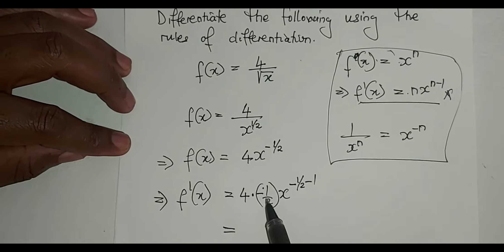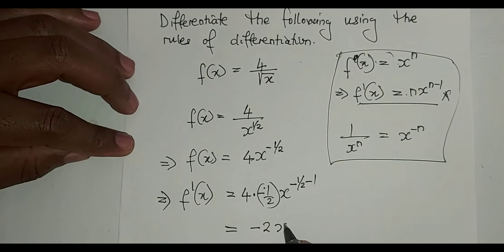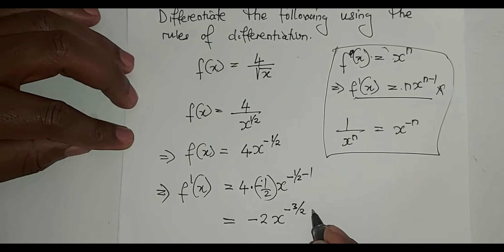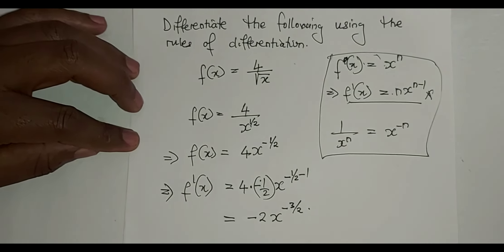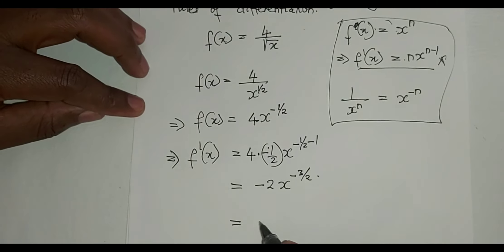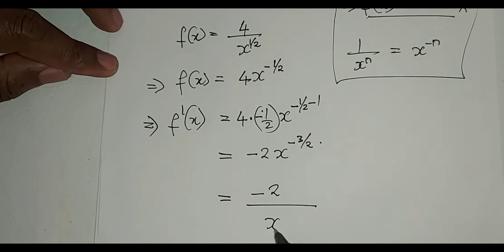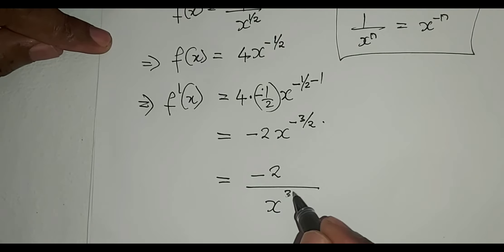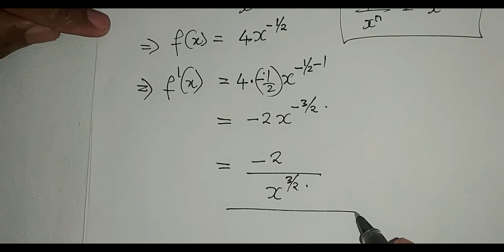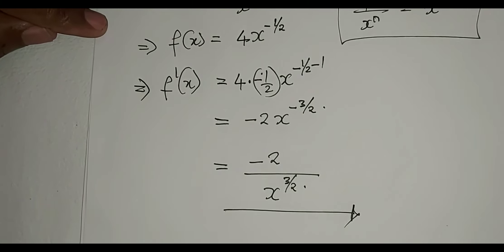We can go on and make this exponent positive by saying it will be equal to minus 2 over x to the power positive 3 over 2, again by using laws of exponents.